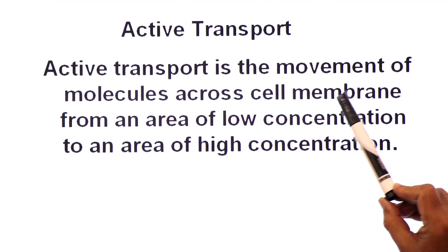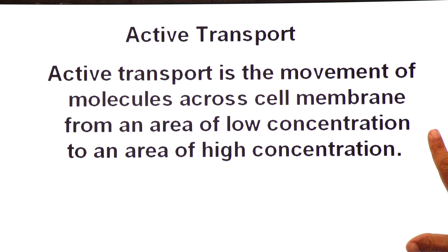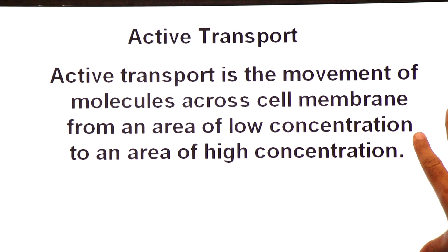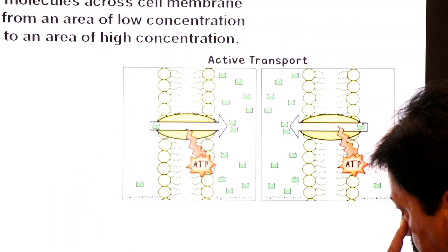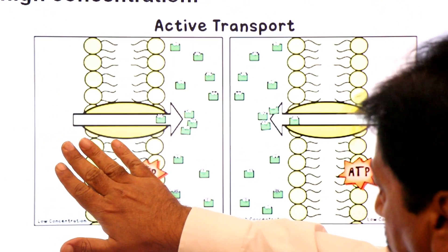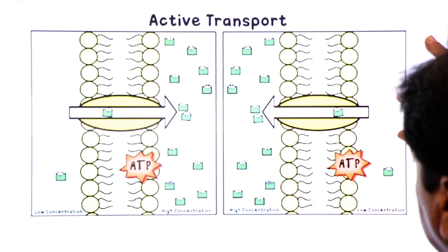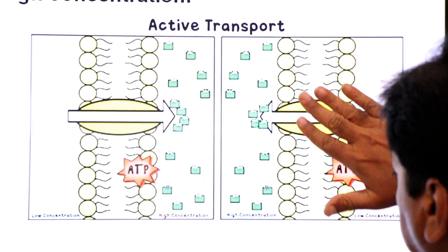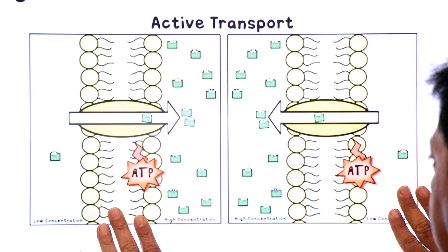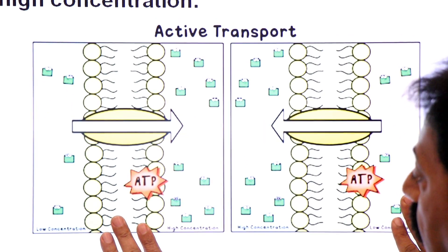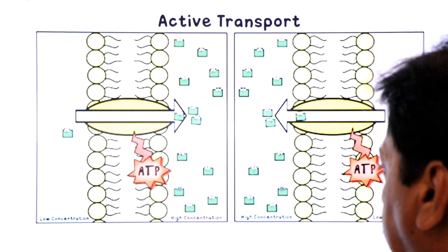Active transport is the movement of molecules across the cell membrane from an area of lower concentration to an area of higher concentration. Molecules move across the plasma membrane from lower concentration to higher concentration through carrier proteins. Since molecules move from low level to high level, they need energy input. This energy comes from ATP — active transport consumes ATP.